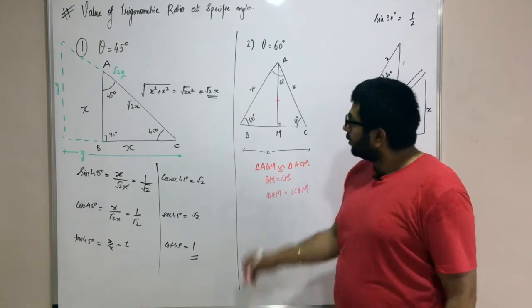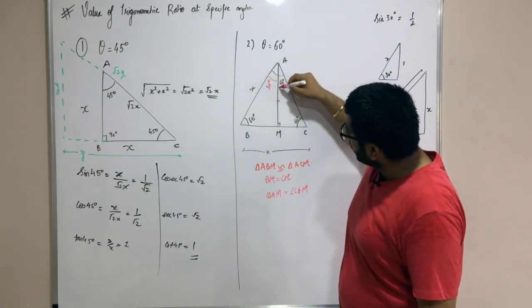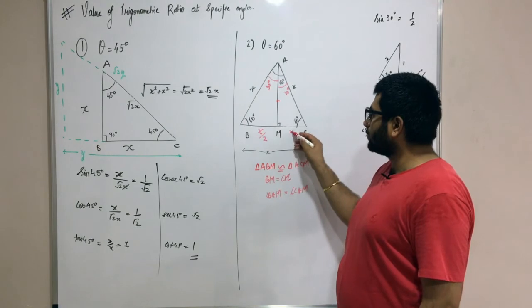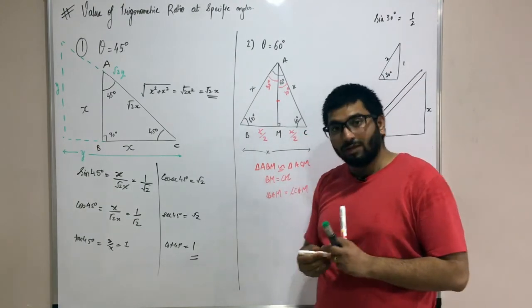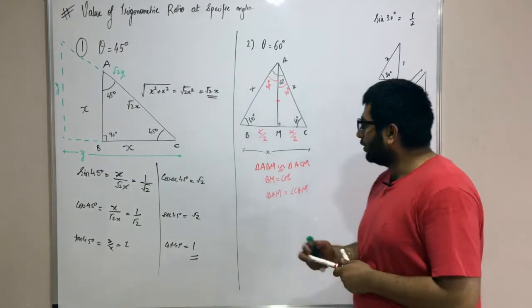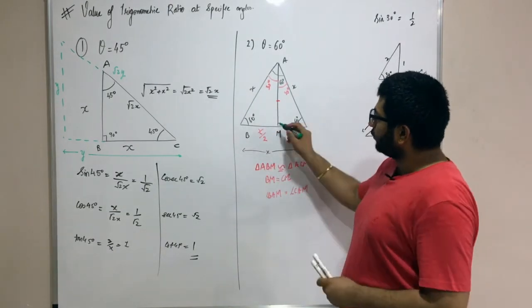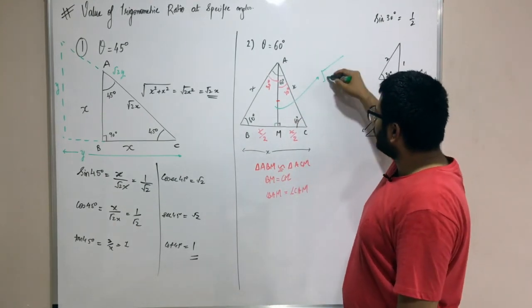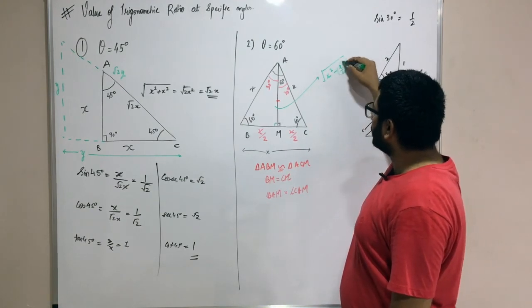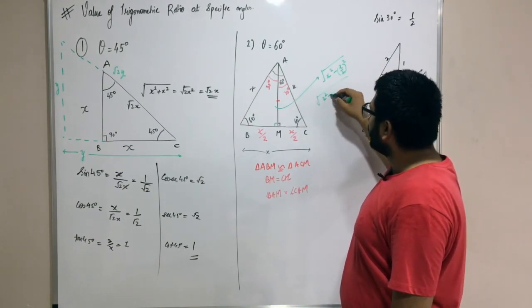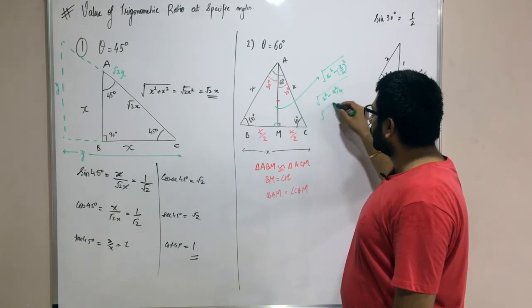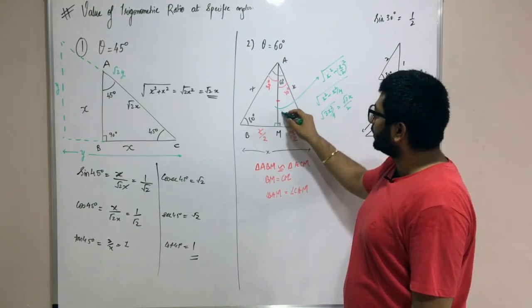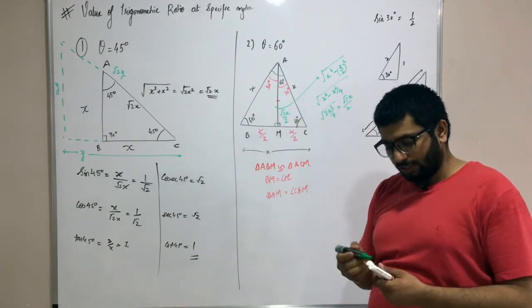Now BM equals CM, so it is divided by 2: this is x by 2 and this is x by 2. Now you tell me, you know this is 90 degrees, so can you find this side? Yes, you can find it out using Pythagoras. Under root of x² minus (x/2)², which becomes root of x² minus x²/4, equals root of 3x²/4, which is root 3x by 2. So this side length is root 3x by 2. Now you have this side, this side, and this side, so you have all the sides of the triangle.